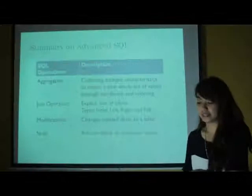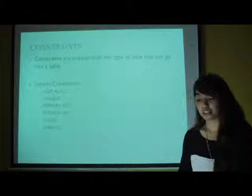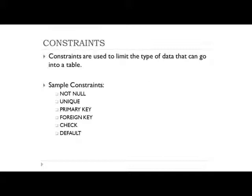We have another concept which is constraints. Constraints are used to limit the type of data that go inside the table. Basically, this is your checks or the program that ensures that whatever the user inputs in the system is correct. We have sample constraints: not null, unique, and two important characteristics in the database which are your primary key and foreign key. We will differentiate them and then the checks and the defaults.